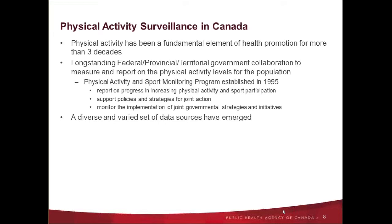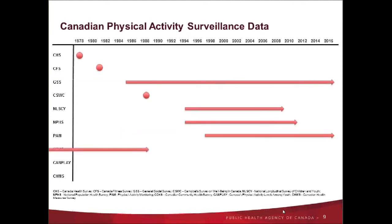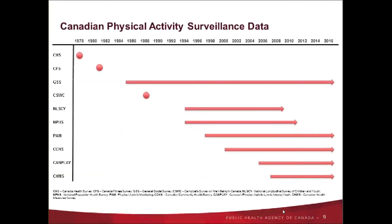In the mid-1990s, the physical activity and sport monitoring program was established — a federal, provincial, territorial, or FPT collaboration — which worked to identify key indicators to track and report on physical activity and sport, with the intention that it would be possible to report on progress in these areas. Stemming from this collaboration, there has been development of many different data sources to report on physical activity, including self-reported surveys, some of which included objective measures, as well as specific population and setting-based surveys. The next slide provides a visual showing the development of key physical activity data sources relied upon at the agency for national-level reporting.